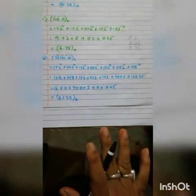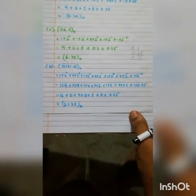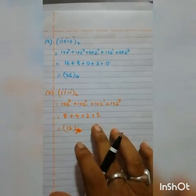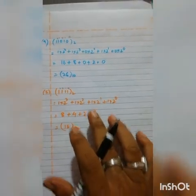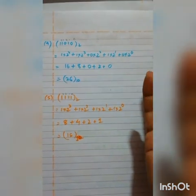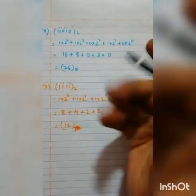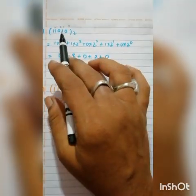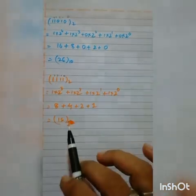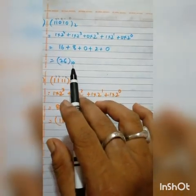Similarly for the third number. Here, there is no decimal point, so there is no need to use negative powers. If a decimal point is present, then use power minus 1 and beyond. Here there is no decimal point, so just assign positive powers, multiply, and add. After writing the result, write the base as 10.